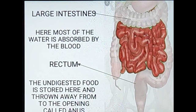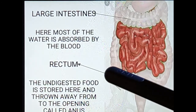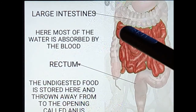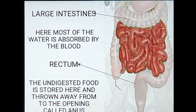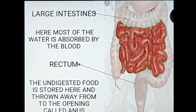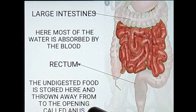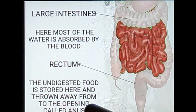Now let us learn about the large intestine and rectum. The undigested food from the small intestine passes to the large intestine, where water present in the food is absorbed. The food which remains undigested is then passed to the rectum, stored there, and thrown out of our body through the opening called the anus. The undigested food is stored in the rectum and excreted through the anus.